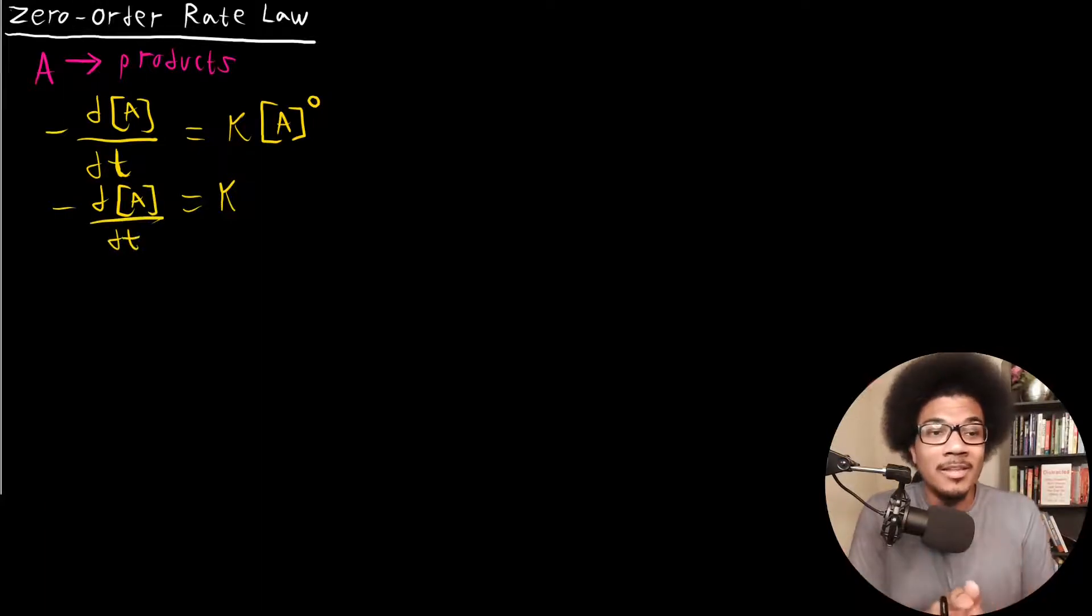Now, what does this mean? This means that the rate will have no dependence on the concentration of the reactant. So regardless of how much of your reactant you start with or how little you start with, it will have no bearing on the rate of the reaction. It's going to be consistent, has no dependence on the concentration of the reactant.